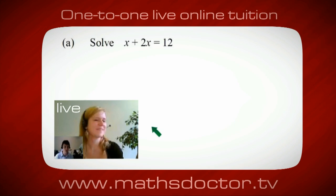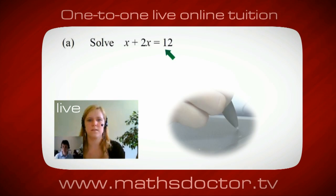Okay, Marie. So, let's have a look at this one. Solve x plus 2x equals 12. So, what do you think you'd do first? Well, I want x on its own. So, I would put x equals 12 minus 2x.